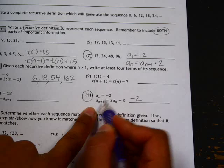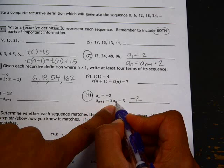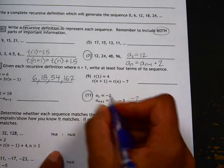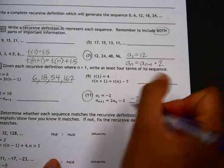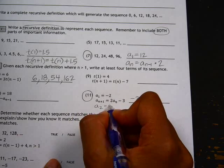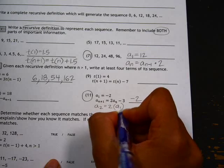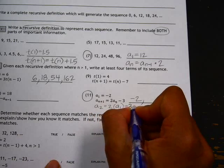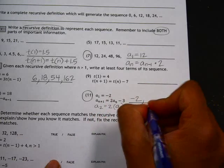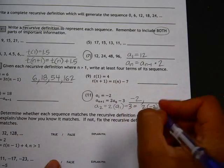So this is saying to get the next term, you're going to do 2 times the previous term and then subtract 3. So to get the second term, I'm going to do 2 times the previous term, which is a sub 1, and then subtract 3. So that would be 2 times negative 2, and then subtract 3, which is negative 7.